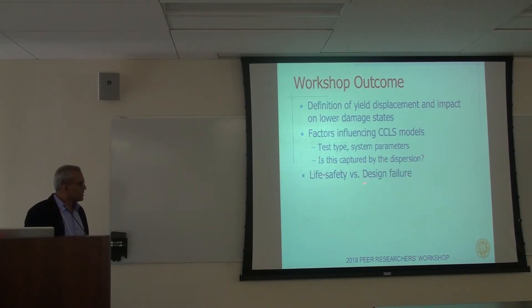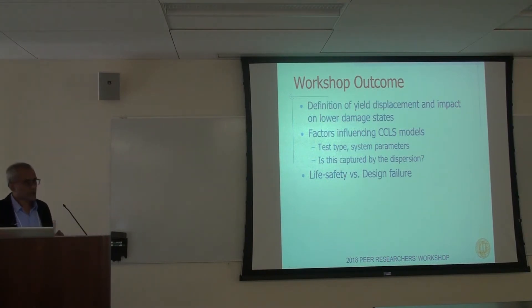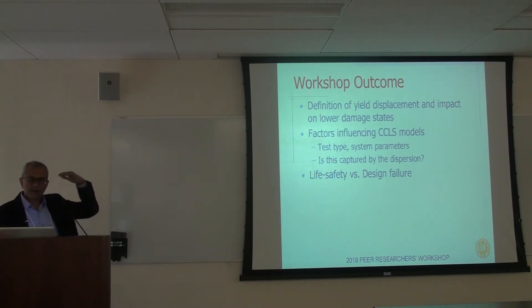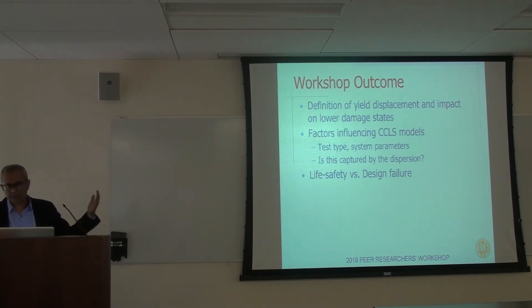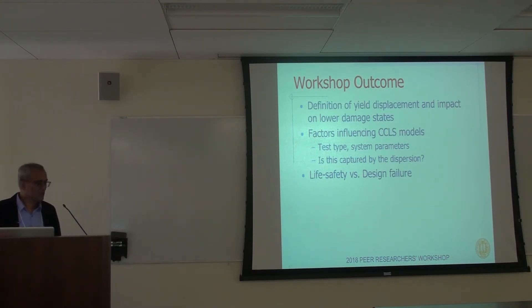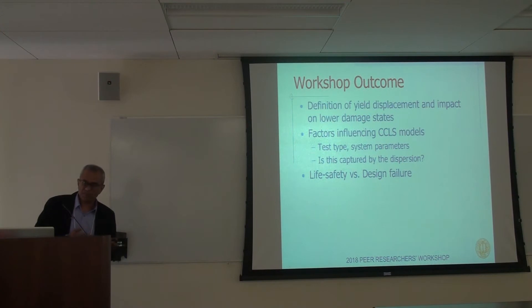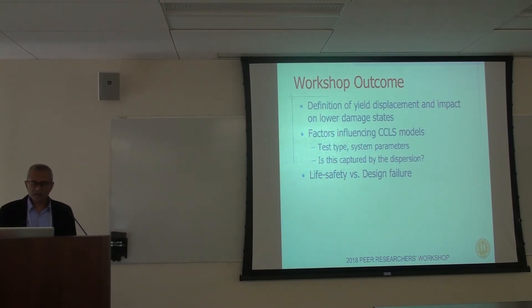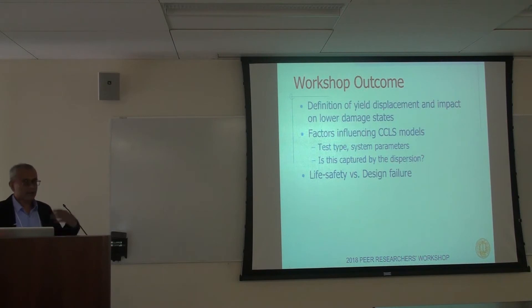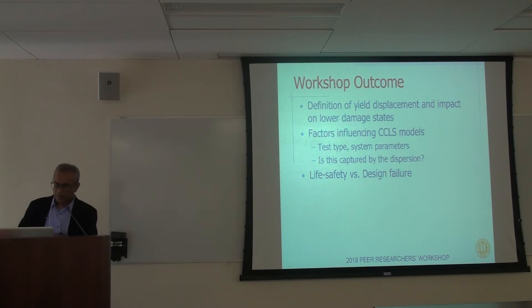Discussion also centered around the concept of life safety versus design failure. Design failure is typically defined by experimenters as the point to stop the test — about 80% of the peak lateral capacity. But in reality, one of the presentations showed a shaking table test done in San Diego where clearly a whole bunch of bars ruptured and buckled, but the column still didn't collapse and was able to take several more earthquakes after that point. So clearly there is a lot more reserve capacity in a bridge after a particular damage state defined by bar buckling and bar rupture.